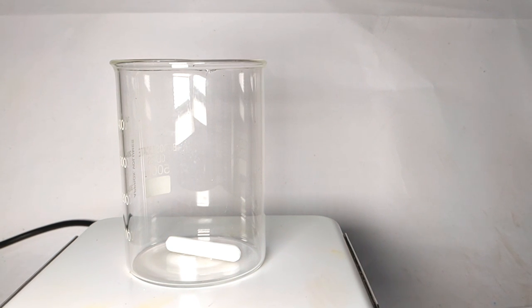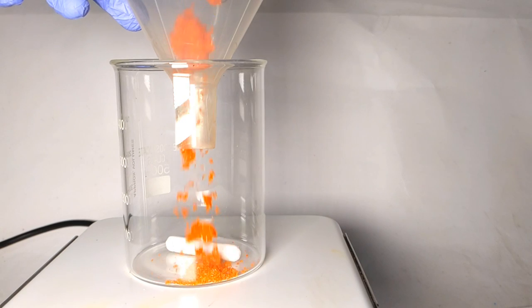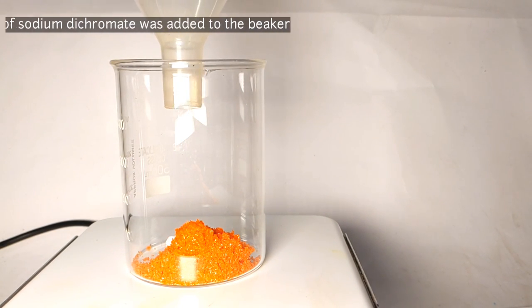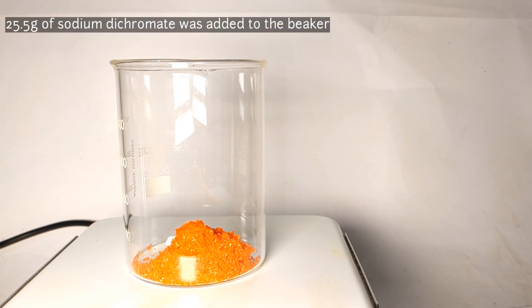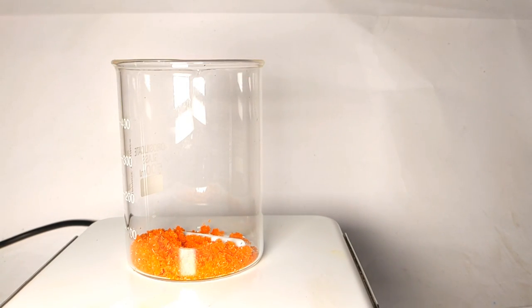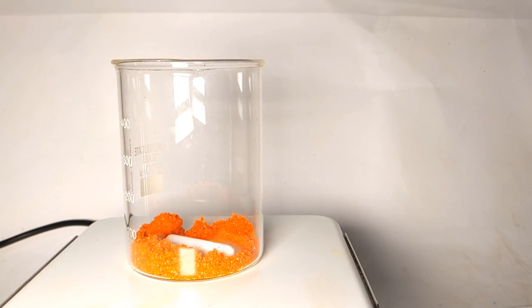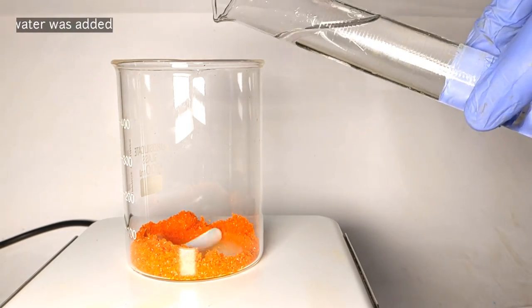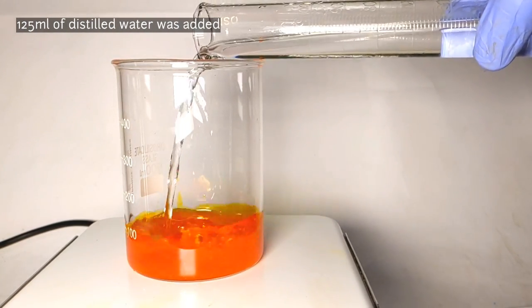Place a 500 milliliter beaker on a hot plate stirrer with a stirring bar inside. Transfer 25.5 grams of sodium dichromate to the beaker. I used the powder funnel to transfer the solid as I have clumsy hands that spill everything. With the stirring turned on, 125 milliliters of distilled water was added.